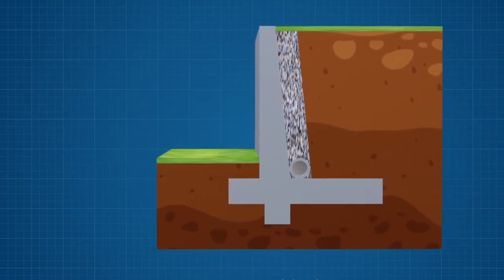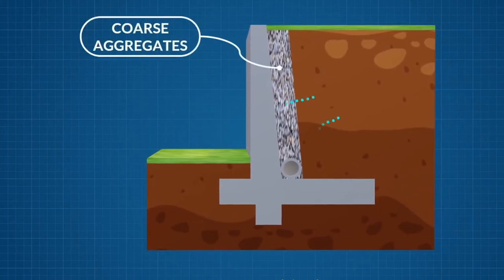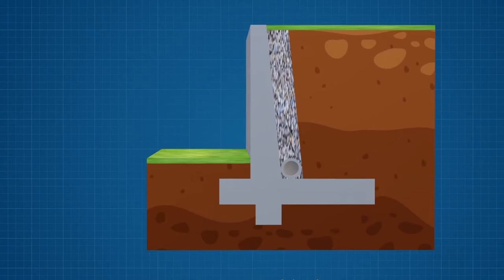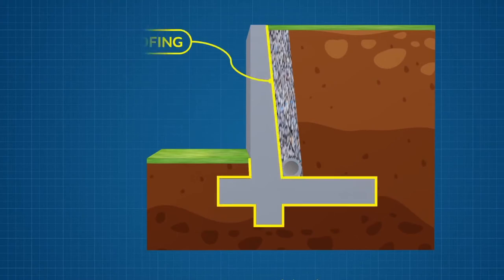Coarse aggregate can be added along the back of the wall. This allows water to flow down to the drain pipe. The wall surface in contact with the soil is typically treated with some form of waterproofing.